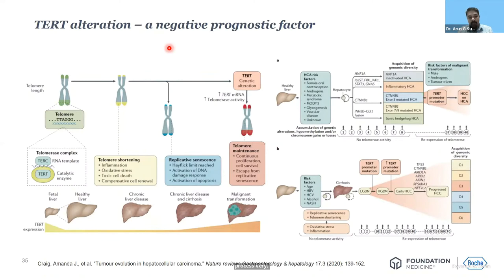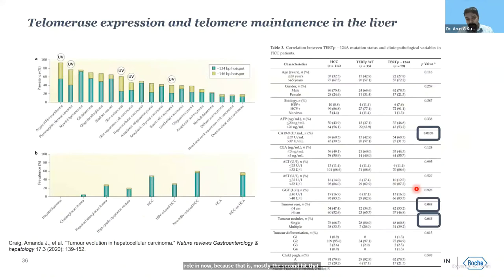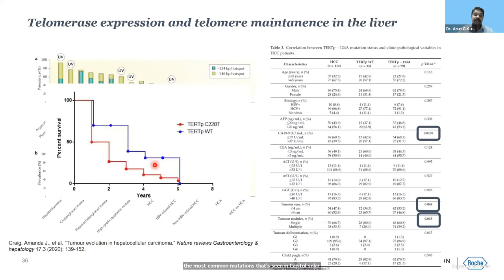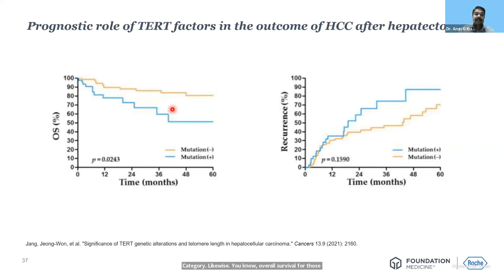TERT is a very important gene which maintains telomeric length. In the progression of liver from healthy to chronic disease to malignant formation, TERT plays a very crucial role — it is mostly the second hit you get just before malignancy — and it's one of the most common mutations seen in hepatocellular carcinomas. Studies have shown that the percentage of survival of patients with TERT mutation is much lower compared to those in the wild-type category, and overall survival for mutation-positive patients is statistically lower than mutation-negative patients. Recurrence after hepatectomy is also much higher in mutation-positive patients.